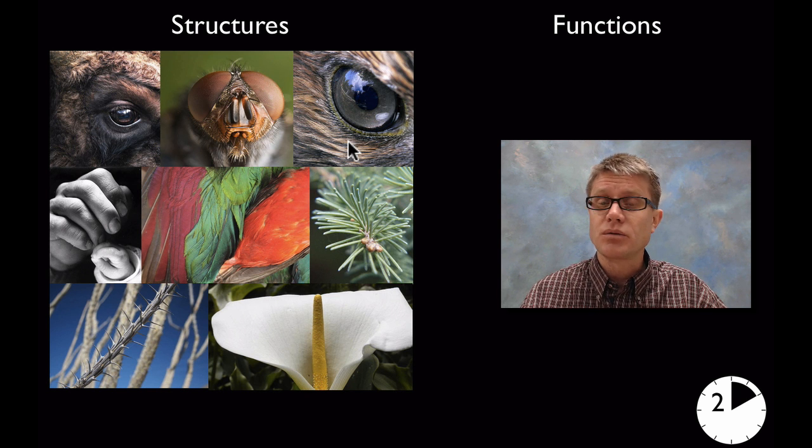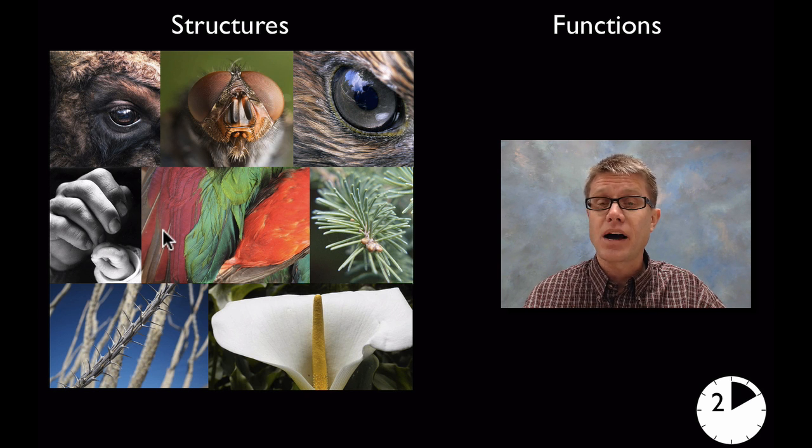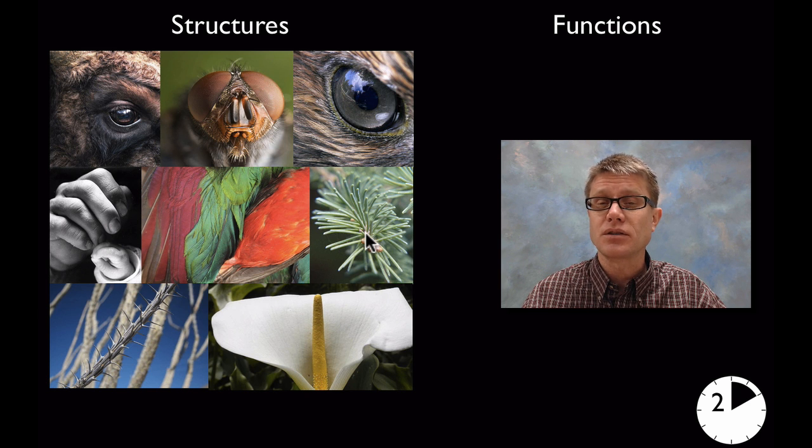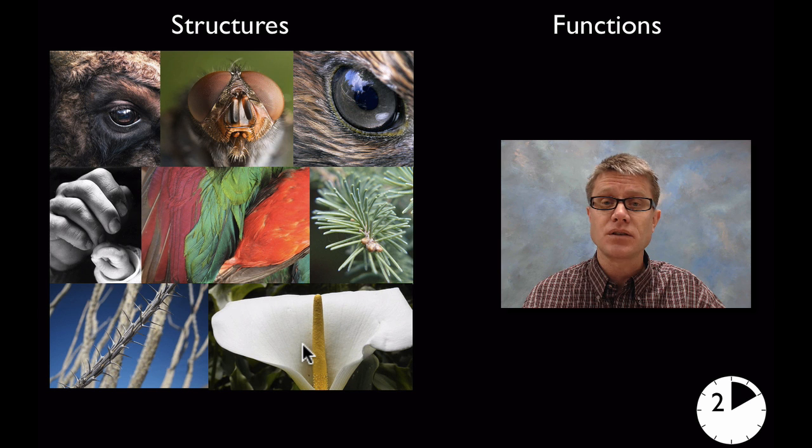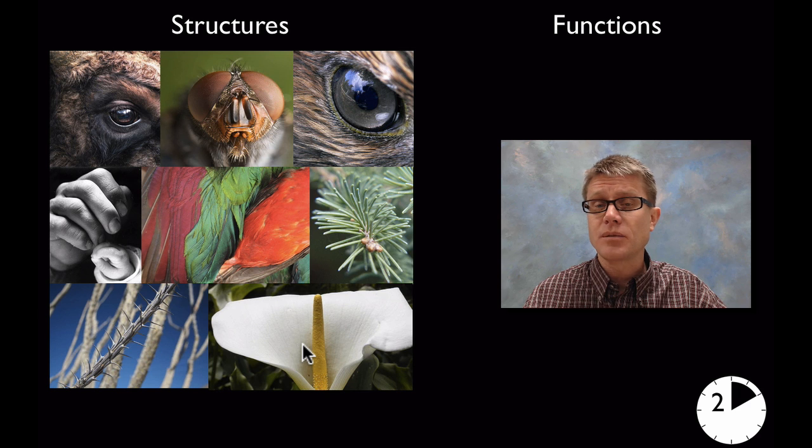Well these are all eyes. And so they'd be responsible for vision. Or your hand is for grasping. These are feathers. So they allow us to fly if we're a bird but also provide insulation. These are the needles on a pine tree. So those are going to give us food. In other words do photosynthesis in plants. Or these spines are defensive. Or flowers are reproductive. And so students should get this understanding in the lower grades that the structure that organisms have fit the job that they do.